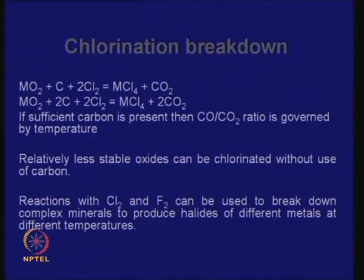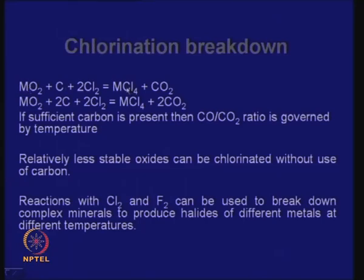When I started talking about halide formation and reduction a couple of lectures ago, I said that when you have a metal oxide, very often we reduce it in the presence of carbon to produce a chloride. Why do we need carbon? Because when the oxides are far too stable, without carbon they will not form the chloride — thermodynamically it is not feasible. But if you bring in a reducing agent, you can think of a two-step process: that reducing agent reduces the oxide, the metal is released, and that reacts with chlorine to form a chloride.